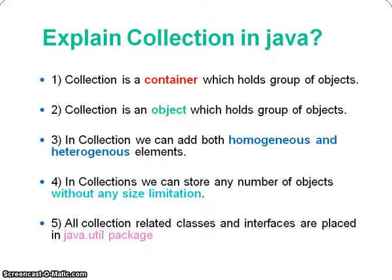Third, in a collection we can add both homogeneous and heterogeneous elements. Homogeneous means same type of elements — that means same data type. Heterogeneous means different types of elements; for example, String and Integer are of different types, so they are called heterogeneous. In a collection we can add heterogeneous elements in a single collection.